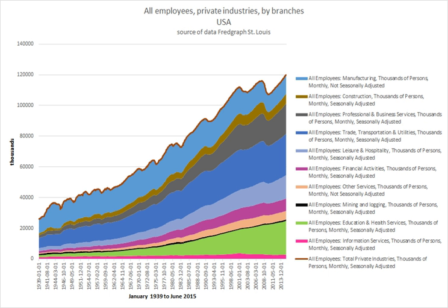According to Swedish law, there are three types of employment. Test employment, where the employer hires a person for a test period of six months maximum. The employment can be ended at any time without giving any reason. This type of employment can be offered only once per employer and employee combination. Usually a time-limited or normal employment is offered after a test employment.